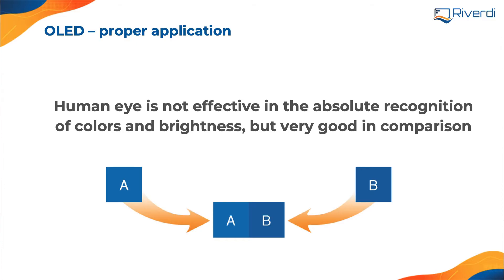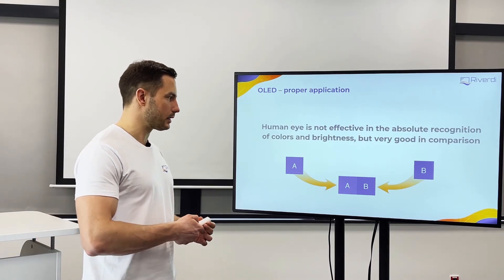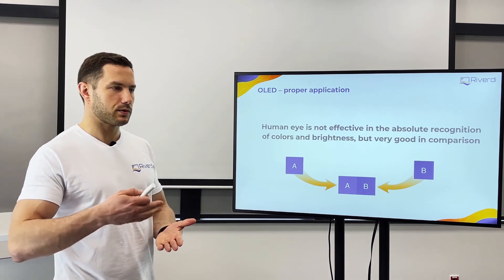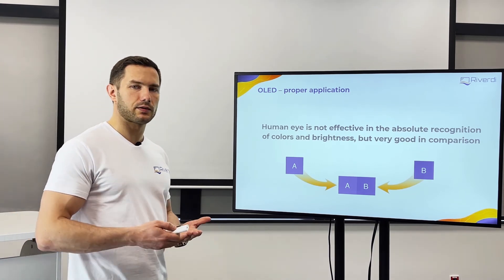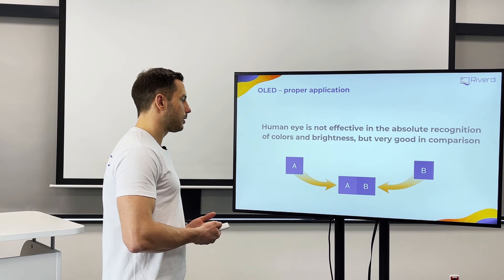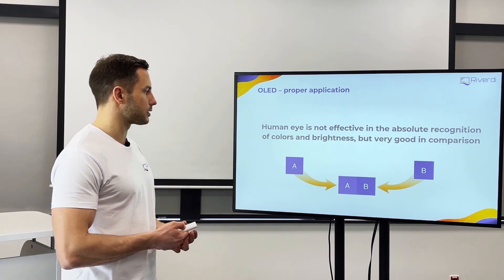However, we are very good at comparison. When we move two pixels next to each other, we can clearly see the differences between them. This is the core problem with OLED displays — if we have two pixels next to each other, after some time some of them will have just a little bit lower brightness, and we will see the difference.